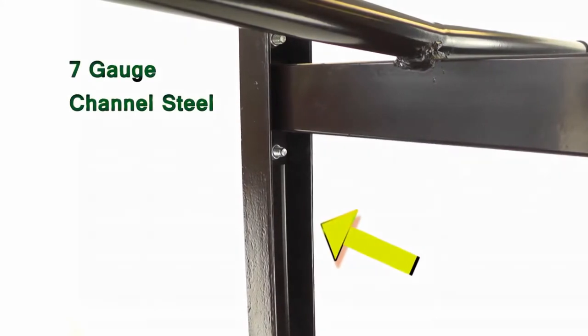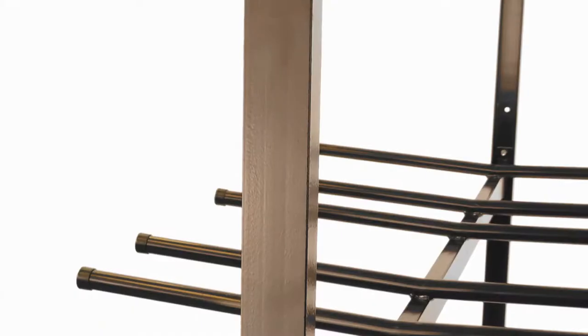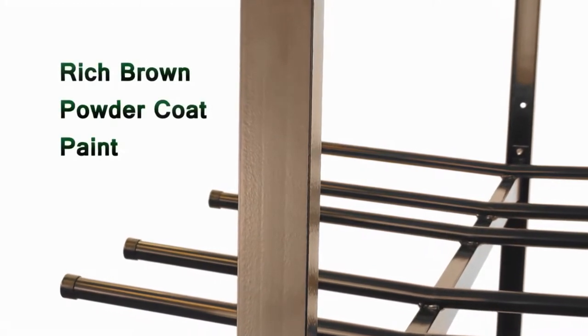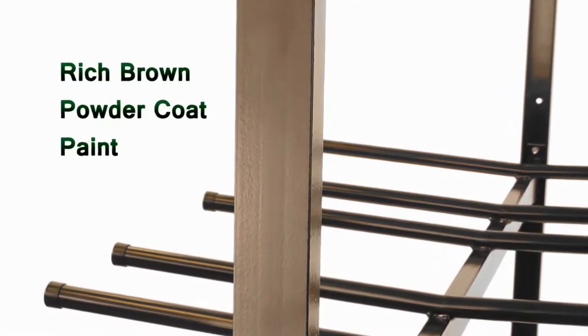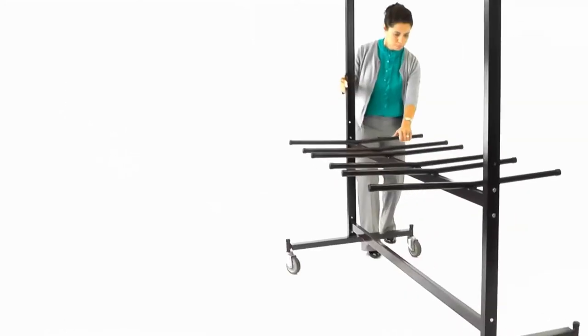Featuring 7-gauge channel steel side beams and 14-gauge crossbars, the Model 84 is powder coated in rich brown paint and capped off with protective caps and glides.